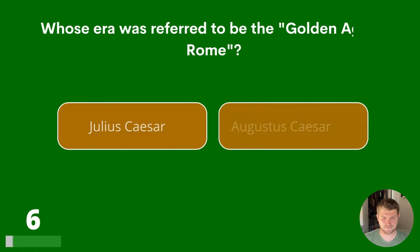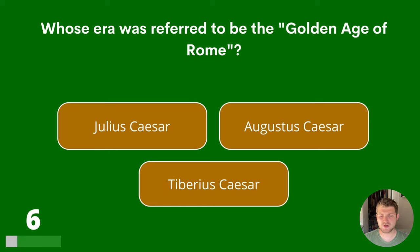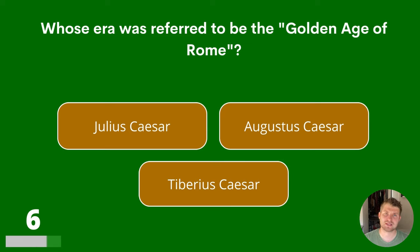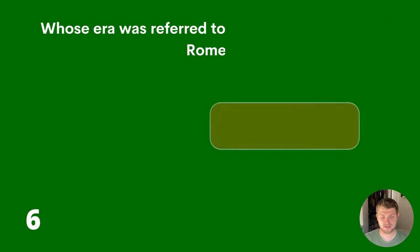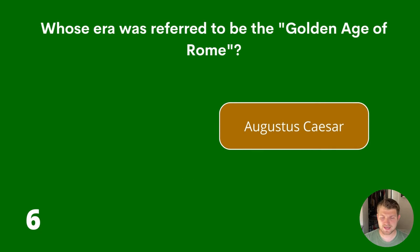Question 6. Whose era was referred to as the Golden Age of Rome? Julius Caesar, Augustus Caesar or Tiberius Caesar? The answer is Augustus Caesar.